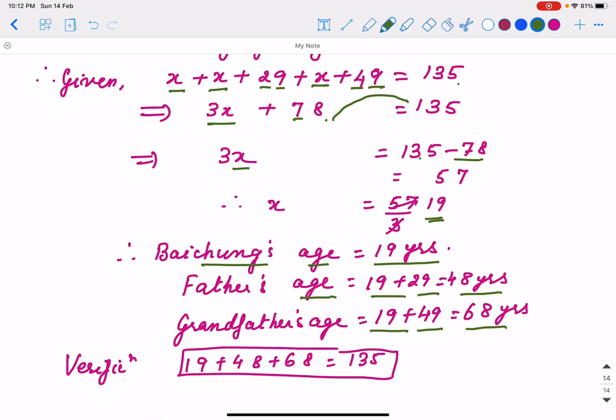For verification, if you add these all ages, what we have got, you will see that it is 135 years. That means our calculation is correct. So this way we find it out.